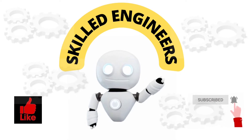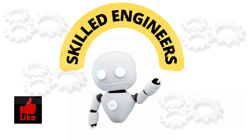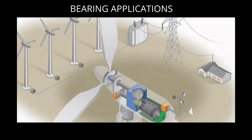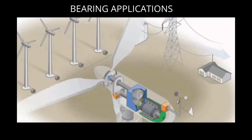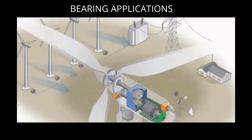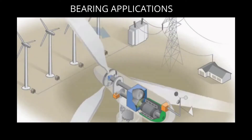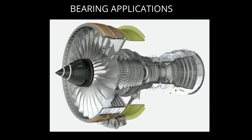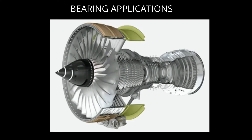Welcome to the channel Skilled Engineers. Bearings are used in automobiles, airplanes, electric generators and so on. They are even used in household appliances that we all use every day, such as refrigerators and air conditioners.